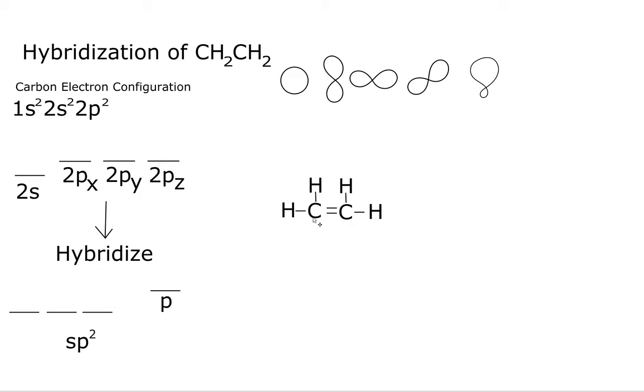So each of these carbons will have SP2 hybridization with a P orbital left over. The P orbital is left over because of this double bond, and double bonds indicate a pi bond, and a pi bond is just when P orbitals overlap in two regions.